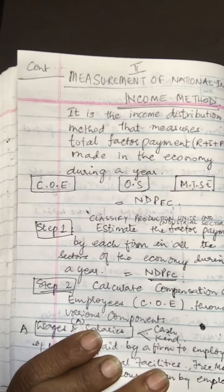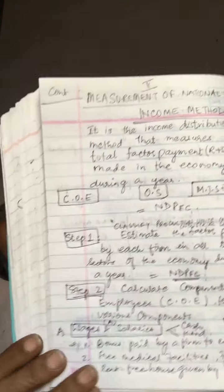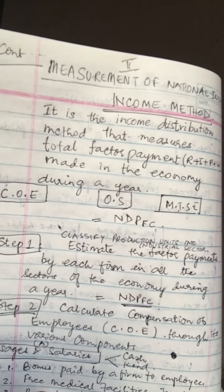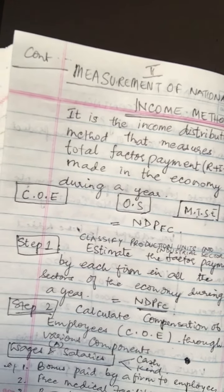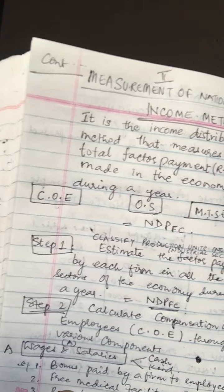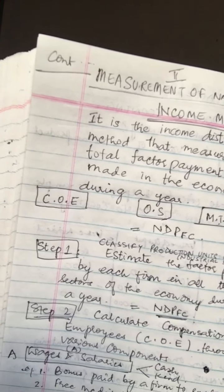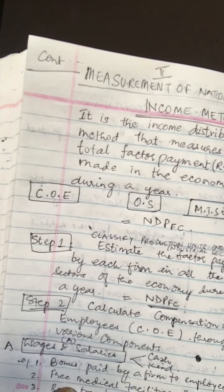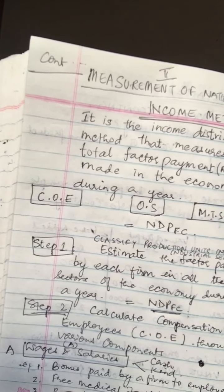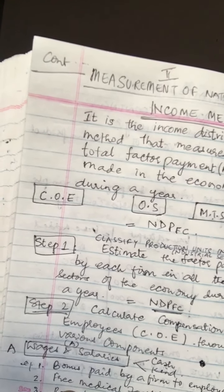Step one is to recognize and divide the economy into industrial units across the three sectors: primary, secondary, and tertiary. Step two is to calculate all incomes given to labor, which is known as compensation of employees — a very comprehensive term.